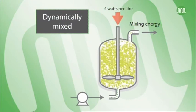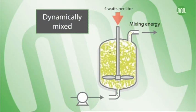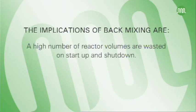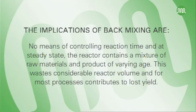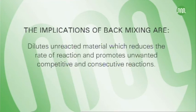A single stirred tank, however, is not practical as a flow reactor since it's fully backmixed. The implications of backmixing are: firstly, a high number of reactor volumes are wasted on start-up and shutdown. Secondly, there is no means of controlling reaction time, and at steady state the reactor contains a mixture of raw materials and product of varying age. This wastes considerable reactor volume and, for most processes, contributes to lost yield. Backmixing also dilutes unreacted material, which reduces the rate of reaction and promotes unwanted competitive and consecutive reactions where these can occur.